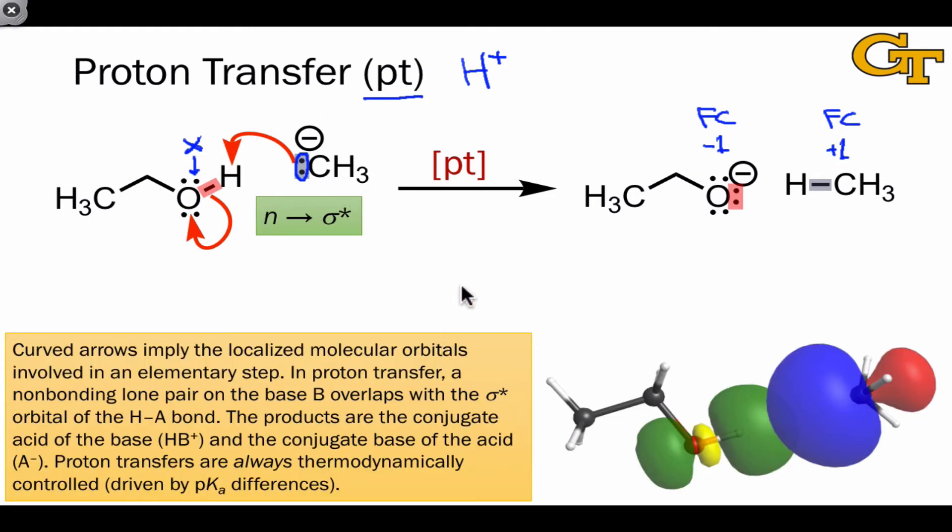An important point that we'll return to later is that curved arrows have physical meaning. Curved arrows imply localized molecular orbital interactions. We've seen this in a resonance context already. The same is true in elementary steps of chemical reactions. The fact that a non-bonding lone pair is used as the electron source in this process implies that it's involved as the filled orbital in an interaction with an empty orbital, which in this case, because a sigma bond is breaking, is the σ* orbital, or sigma anti-bonding orbital, of the OH bond.